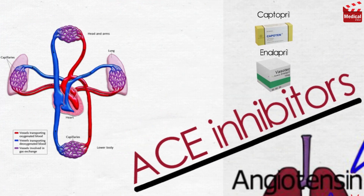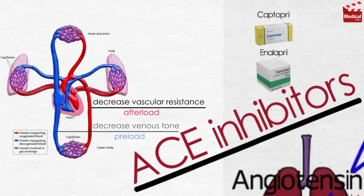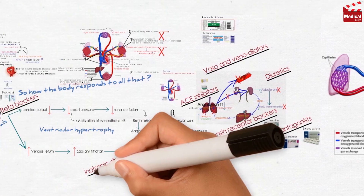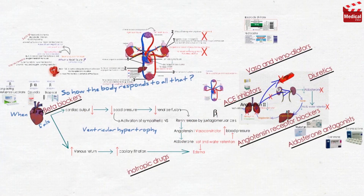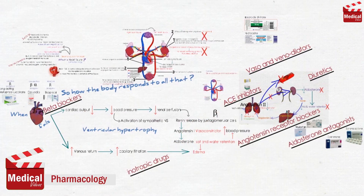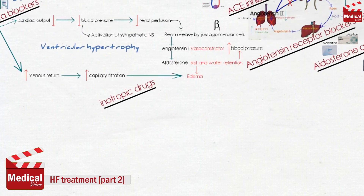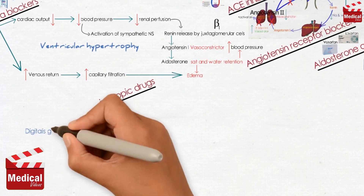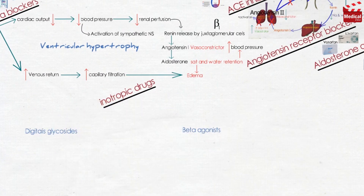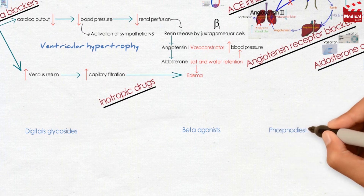In the previous lecture we discussed the first part in the treatment options of heart failure. In this lecture we'll talk about the second part, which is the inotropic drugs. We'll go through three groups: digitalis glycosides, beta agonists, and phosphodiesterase inhibitors. We'll talk about their mechanisms, trade names, and uses.